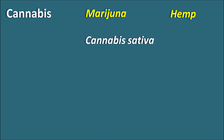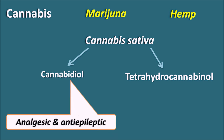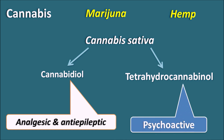Cannabidiol comes from the cannabis species, and this species contains many compounds. Among them the two important compounds are cannabidiol as well as tetrahydrocannabinol. Cannabidiol can act as an anxiolytic as well as an anti-epileptic compound, whereas tetrahydrocannabinol is a psychoactive compound resulting in hallucinations and other psychoactive symptoms.